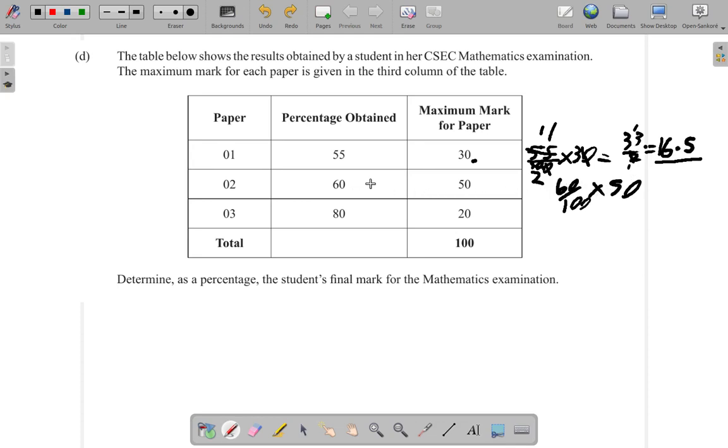Now for paper 2, the marks available is 50. So 60% of 50: 10 into 50 goes 5, 10 into 100 goes 10, simplifying gives 2 into 60 equals 30. So that person got 30 marks out of the 50 marks.